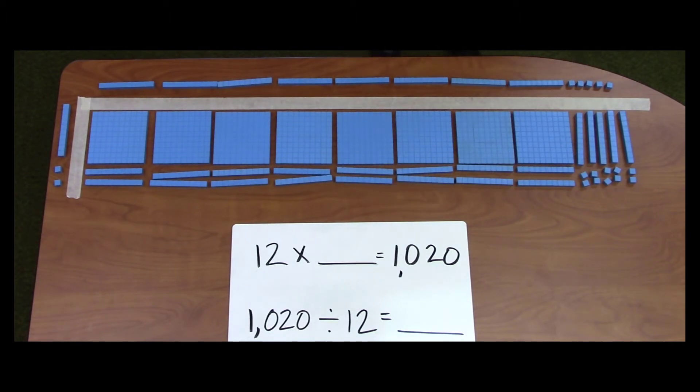So, now that I have a total of 1,020 for my area, I will count the base 10 blocks to determine the length of the rectangle. 10, 20, 30, 40, 50, 60, 70, 80, 81, 82, 83, 84, 85.